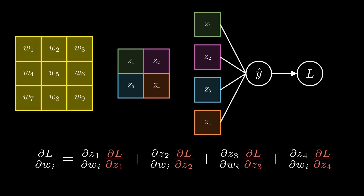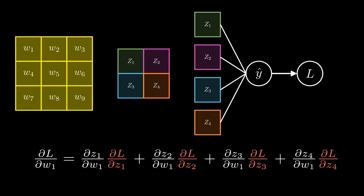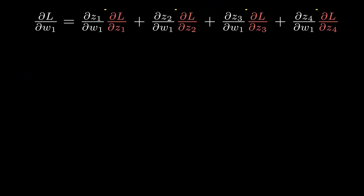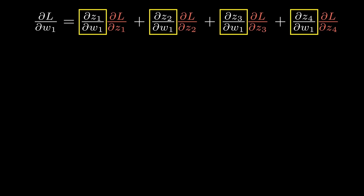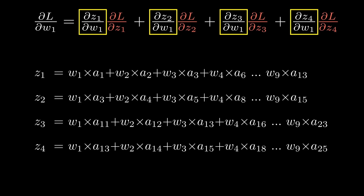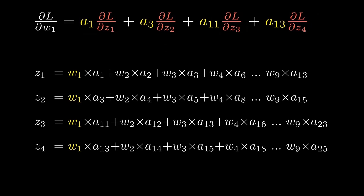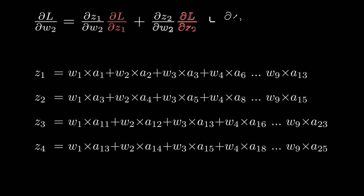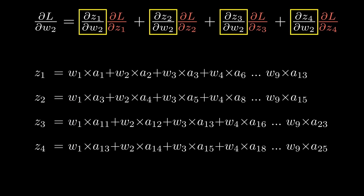But let's continue looking at the partial derivative of the loss with respect to w1 and try to simplify that equation further. Looking at the terms where we take the partial derivative with respect to w1, we notice that we can solve them using the equations from earlier. A quick recap on partial derivation: since we are taking the partial derivative with respect to w1, we treat w1 as the only variable and consider everything else as constants. Therefore, the solutions are as follows, and we can replace the partial derivative terms with their respective solutions. Let's do the exact same thing for the partial derivative of the loss with respect to w2, treating w2 as the variable and everything else as constants. That gives us the solution for the partial derivative with respect to w2.